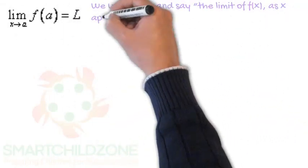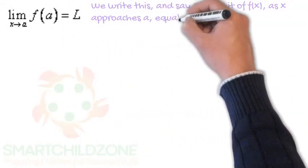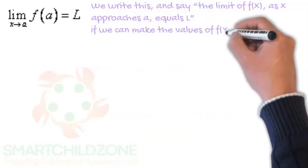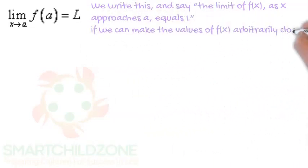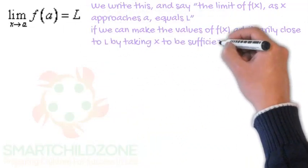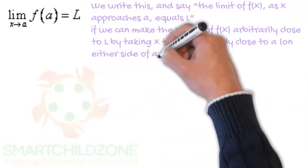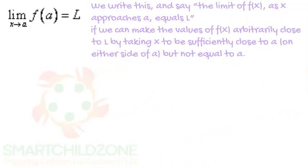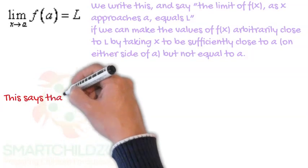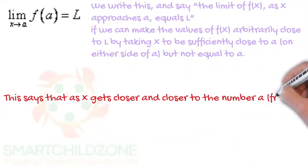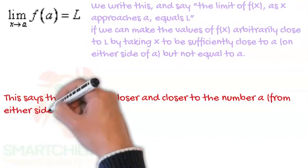We write and say the limit of f(x) as x approaches a equals L if we can make the values of f(x) arbitrarily close to L by taking x to be sufficiently close to a on either side of a, but not equal to a.